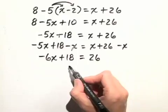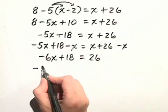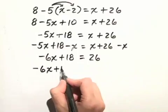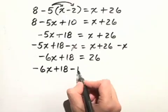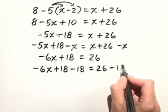Next we'll subtract 18 from both sides of this equation to get the constants on the right hand side. So we have negative 6x plus 18, minus 18, equals 26 minus 18.